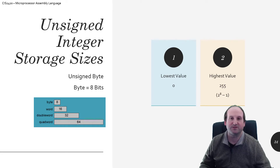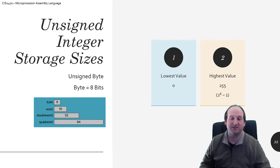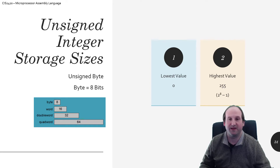The smallest representable number that we can use in assembly language is the byte, which is eight bits of storage. It's easy to think of this as just a series of switches — ons and offs — eight of them in successive order. So of course if all of them were off, all eight of them, the value would be zero.